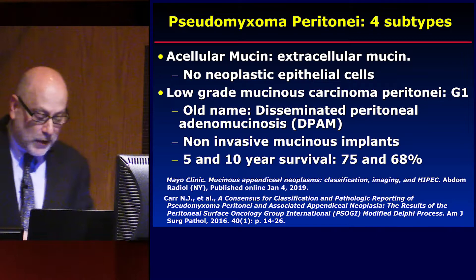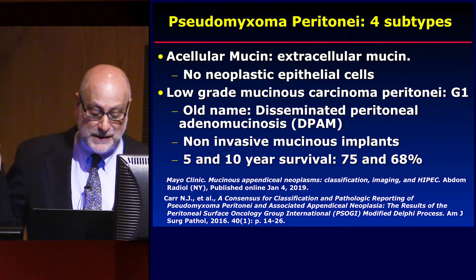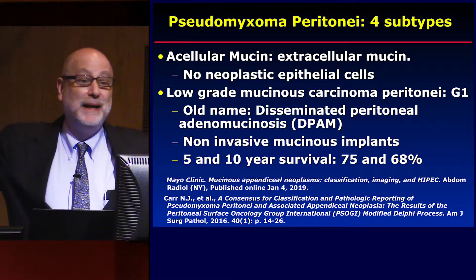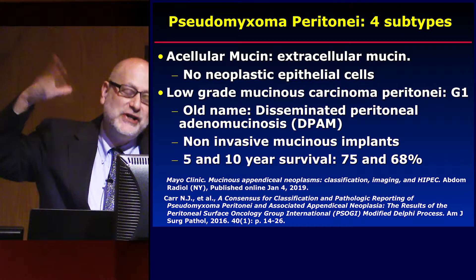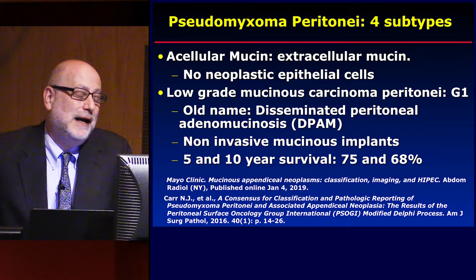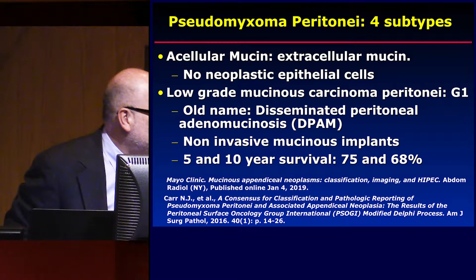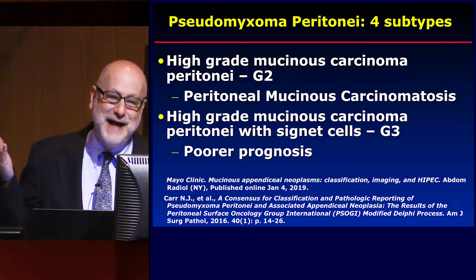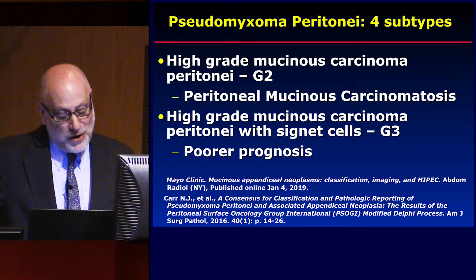Going back to that 2016 classification: acellular mucin means the only thing out in the peritoneal cavity — the jelly belly — has no neoplastic cells; washing out the extracellular mucin will in theory be curative. Low-grade mucinous peritonei, grade one — limited laparoscopic HIPEC will be curative because this is low-grade tumor, with very optimistic five- and ten-year survivals. Then the not-so-great actors: grade two and grade three, with mucinous adenocarcinoma or high-grade with high percentage of signet cells.